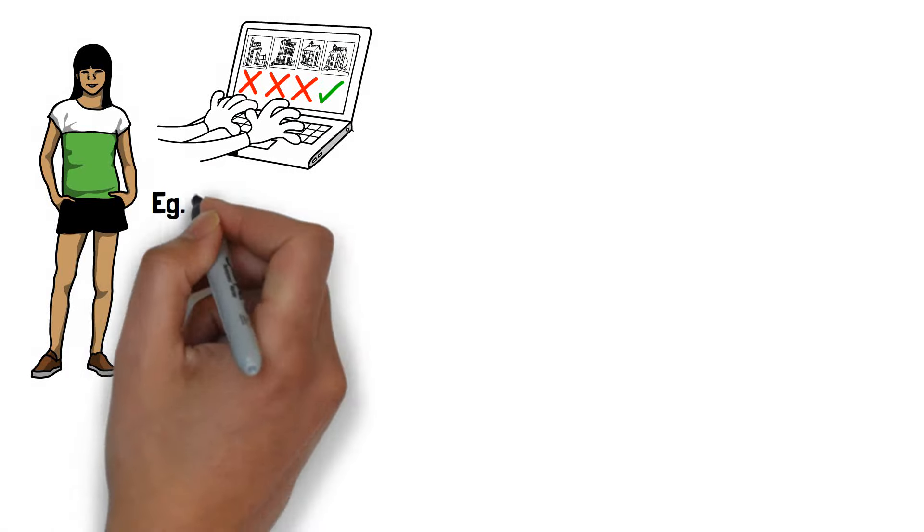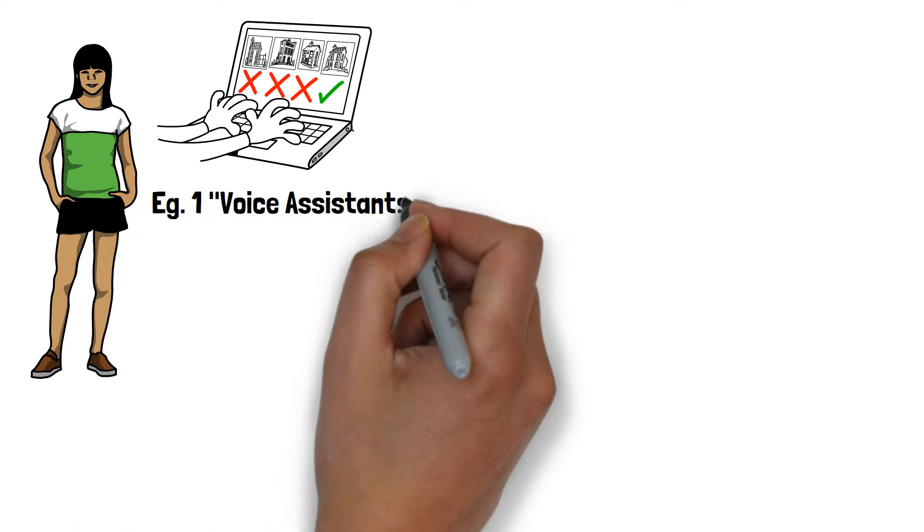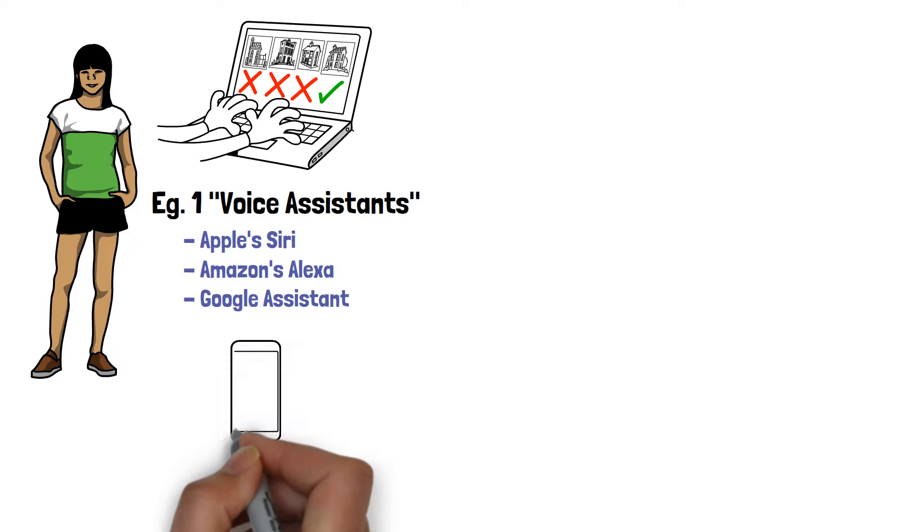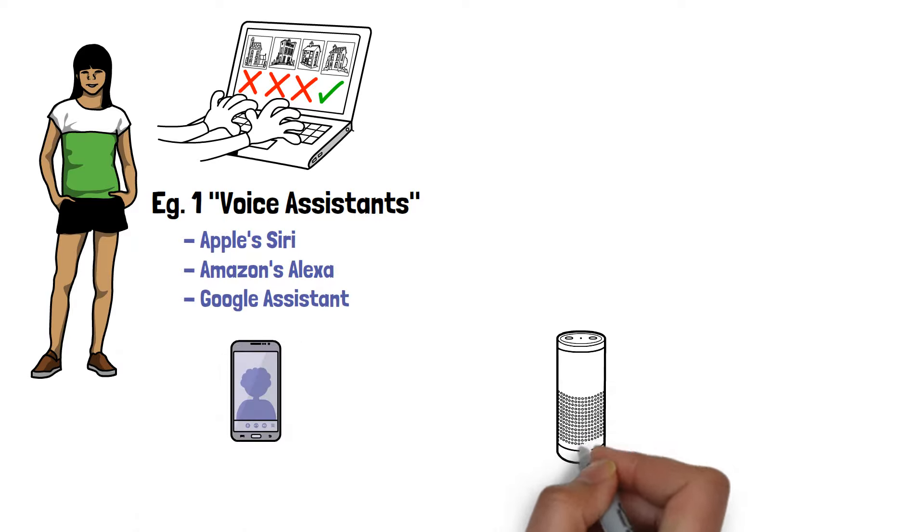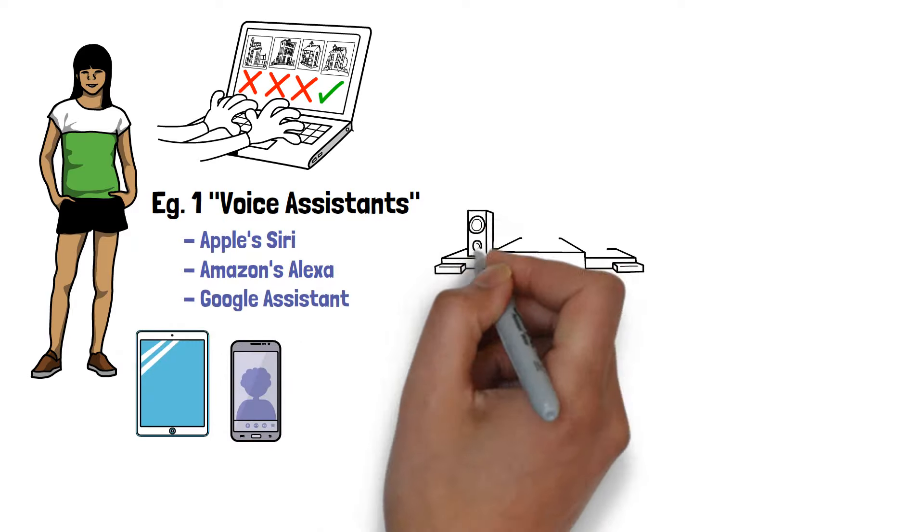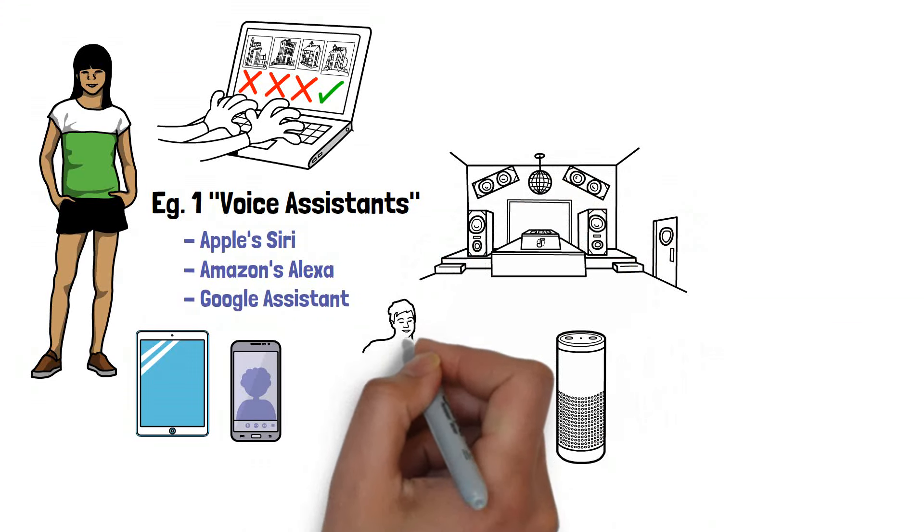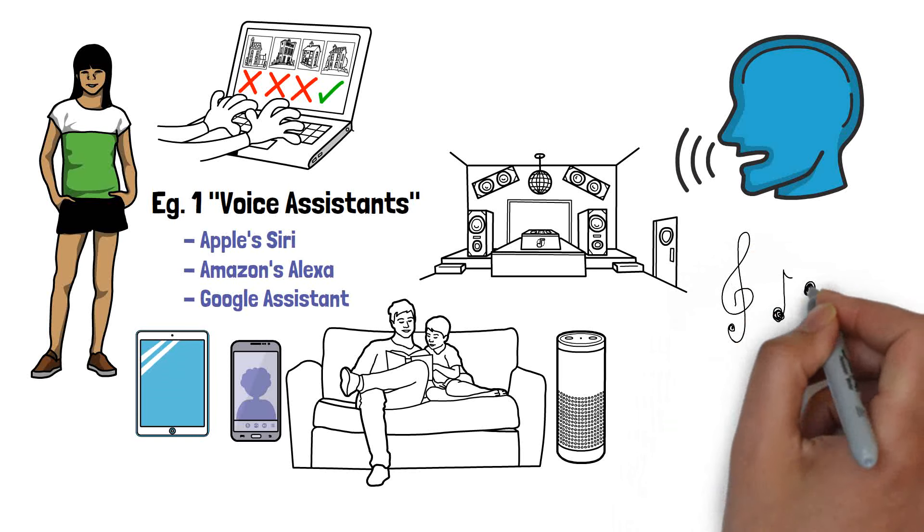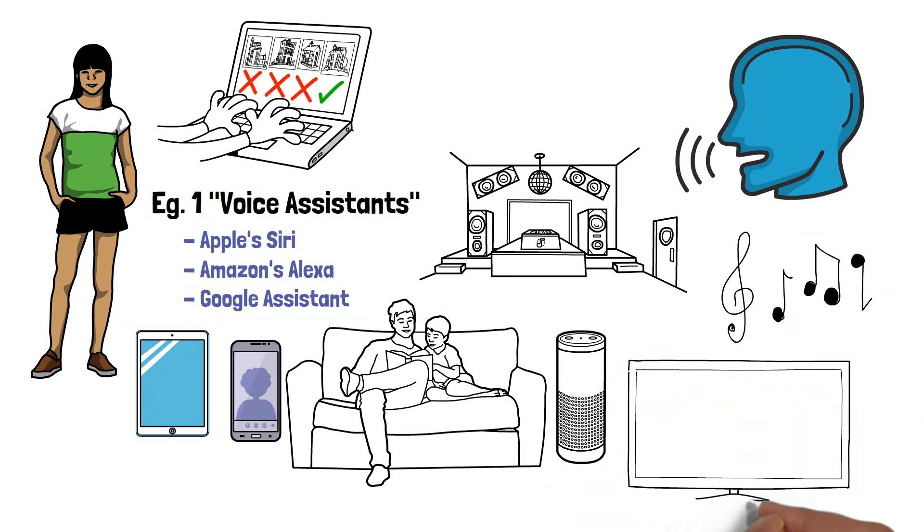Some common examples of AI include voice assistants. These are AI-powered voice assistants like Apple's Siri, Amazon's Alexa, and Google Assistant, which can understand and respond to our voice commands, providing us with information, playing music, and even controlling smart home devices.